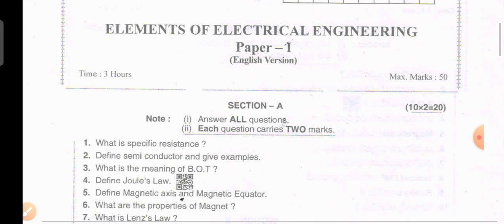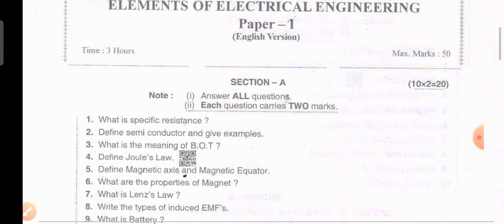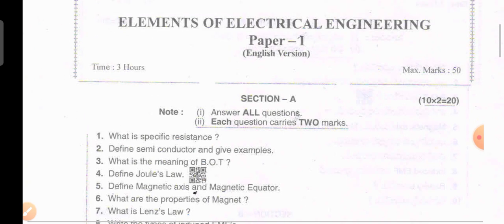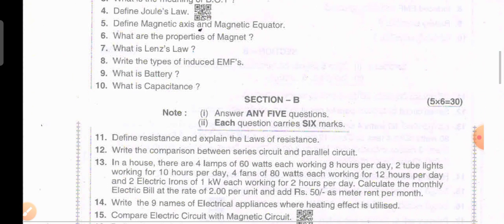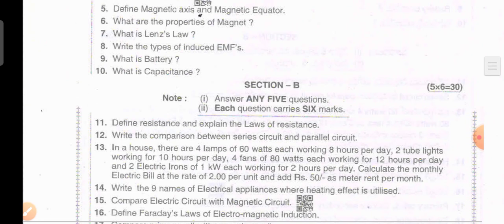Paper 1 is Elements of Electrical Engineering and you may have 50 marks total. There are 10 questions and if you have a choice of 10 questions out of 15, you have to write 10. So those are the sections and requirements for this question paper.